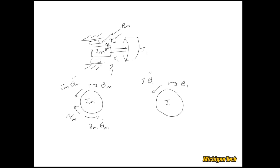One way to figure out how the torque is shared between Jm and J1 is to impose on each disk a small positive displacement — preferably not equal, because if they're equal, the moment due to the torsional shaft will be zero. So let's give J1 a large positive displacement and Jm a small positive displacement. The effect of that torsional shaft is going to be to try to pull Jm in the positive direction, with an equal and opposite moment on the J1 disk. The magnitude of that moment is K1 times (theta1 minus theta_m).